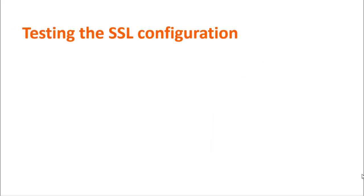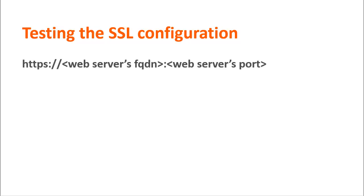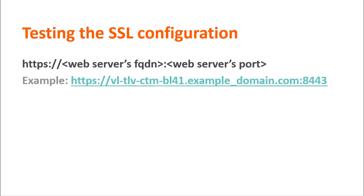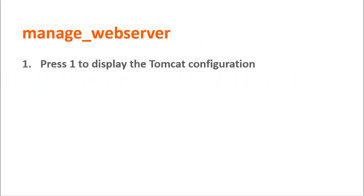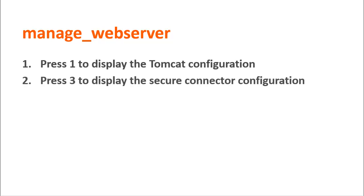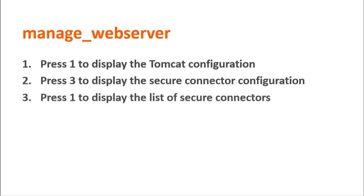Now we need to test the SSL configuration on the Control-M web server. From a web browser on the Control-M client computer, type the URL of the web server's FQDN. Verify the hostname and port, which are used by the relevant connector, by running the manage web server utility. Press 1 to display the Tomcat configuration. Press 3 to display the secure connector configuration. Press 1 to display the list of secure connectors. If you want to add, change, or delete secure connectors, see the Control-M help.